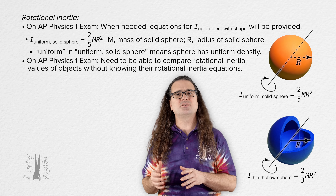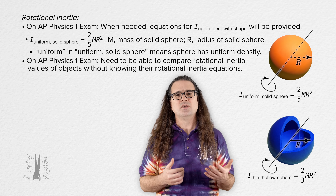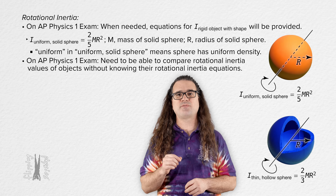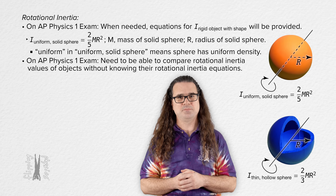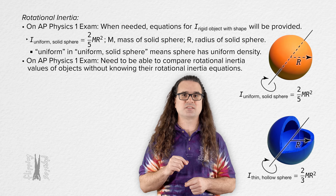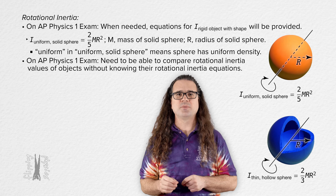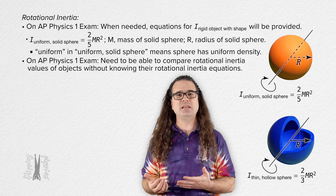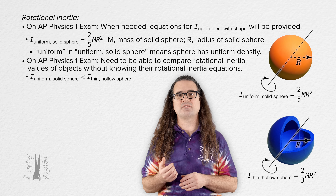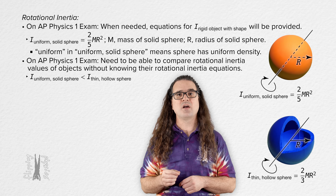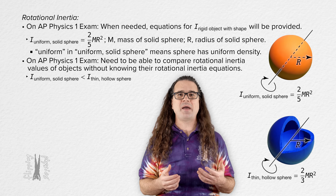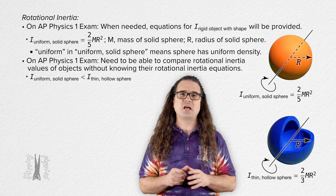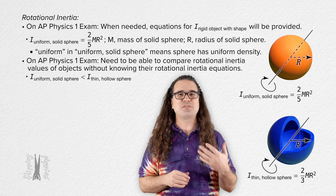On the AP exam, you may be asked to compare the rotational inertia of two different objects about their axes of rotation without knowing the equations for their rotational inertia. Realize that the larger the percentage of mass an object has farther away from its axis of rotation, the larger its rotational inertia will be, because r is squared in the rotational inertia equation. For example, assuming the same mass and radius, the rotational inertia of a uniform solid sphere is less than that of a thin hollow sphere, because on average the mass of a uniform solid sphere is closer to its center of mass than the mass of a thin hollow sphere.